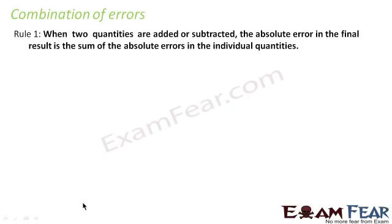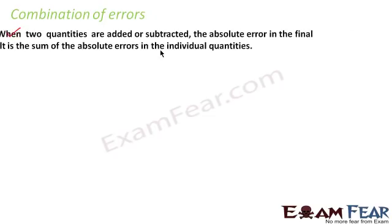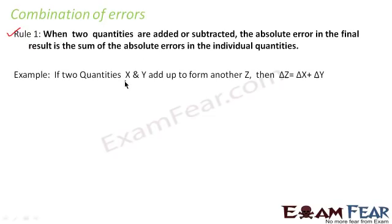There are three rules for combination of errors. The first rule states: when two physical quantities are added or subtracted, the absolute error in the final result is the sum of the absolute errors in the individual quantities. That means, if we have two quantities x and y that together form another quantity z, the absolute error in z will be equal to the sum of the absolute errors in x and y. We will now see how.